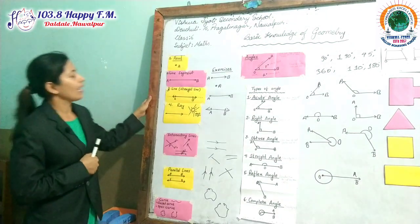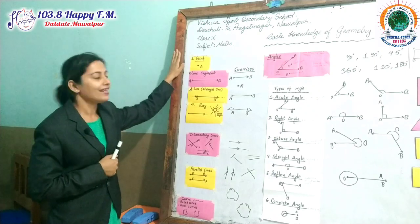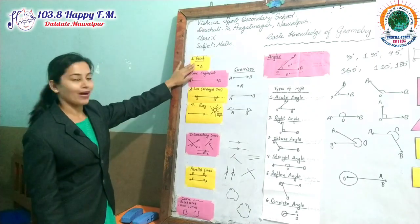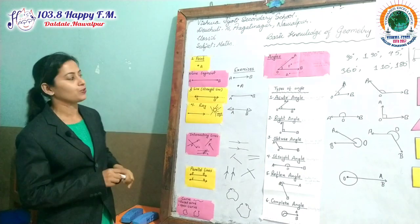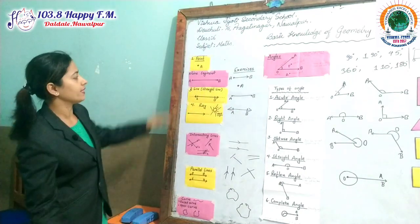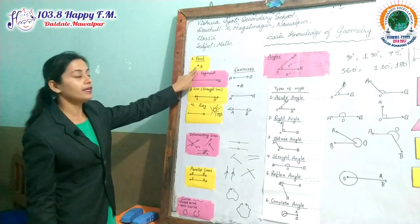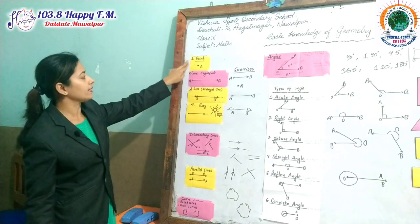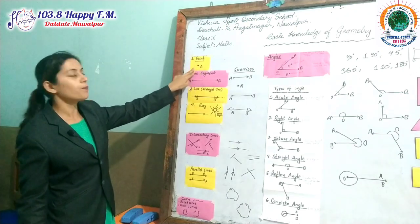Without delay, I am going to start the first topic. The first topic is point. It is very easy — when you give a dot, that is a point. Here I have given the name A, so it is pronounced point A.